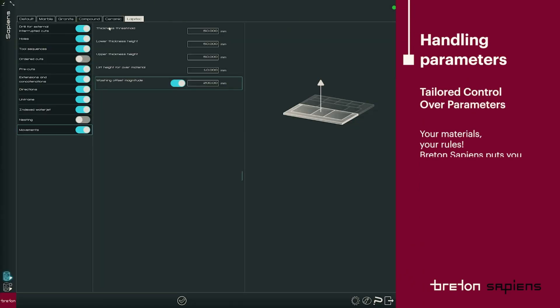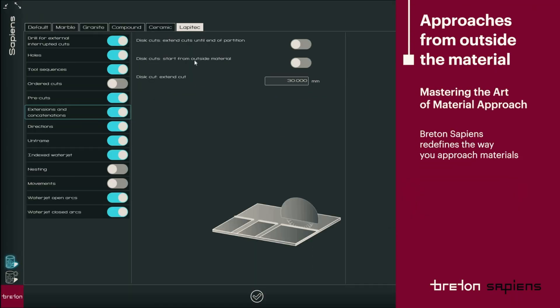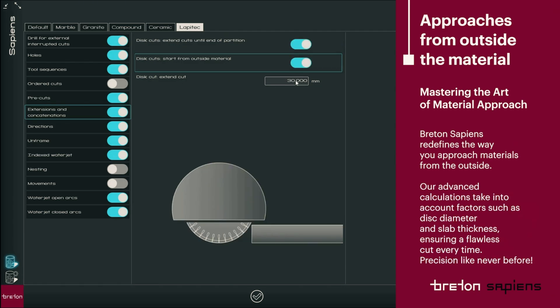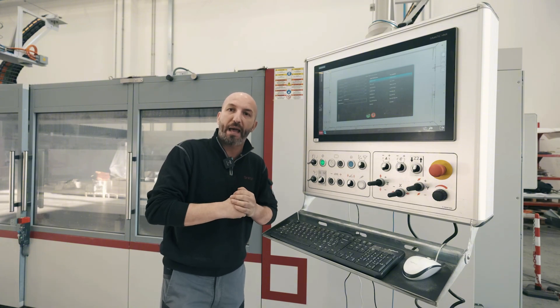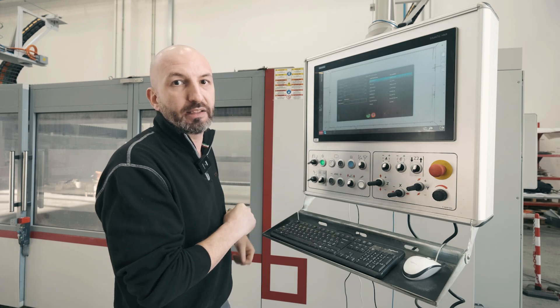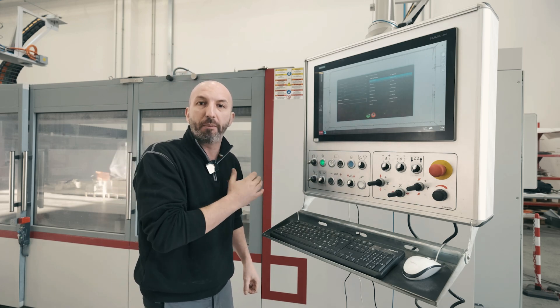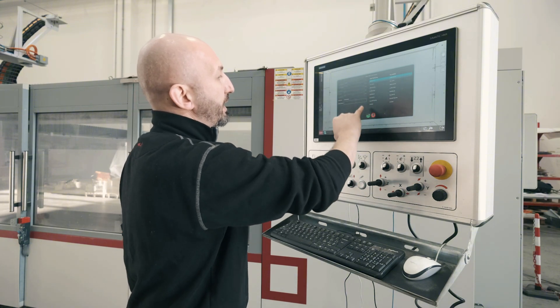All of those steps that normally requires a regular operator a lot of time and the possibility of making mistakes are included into these recipes. So basically, even an unskilled or unexperienced operator, once he chose the right material, will lead the machine to adopt the best movements and the best strategies to get the job done in the most efficient and safe way.